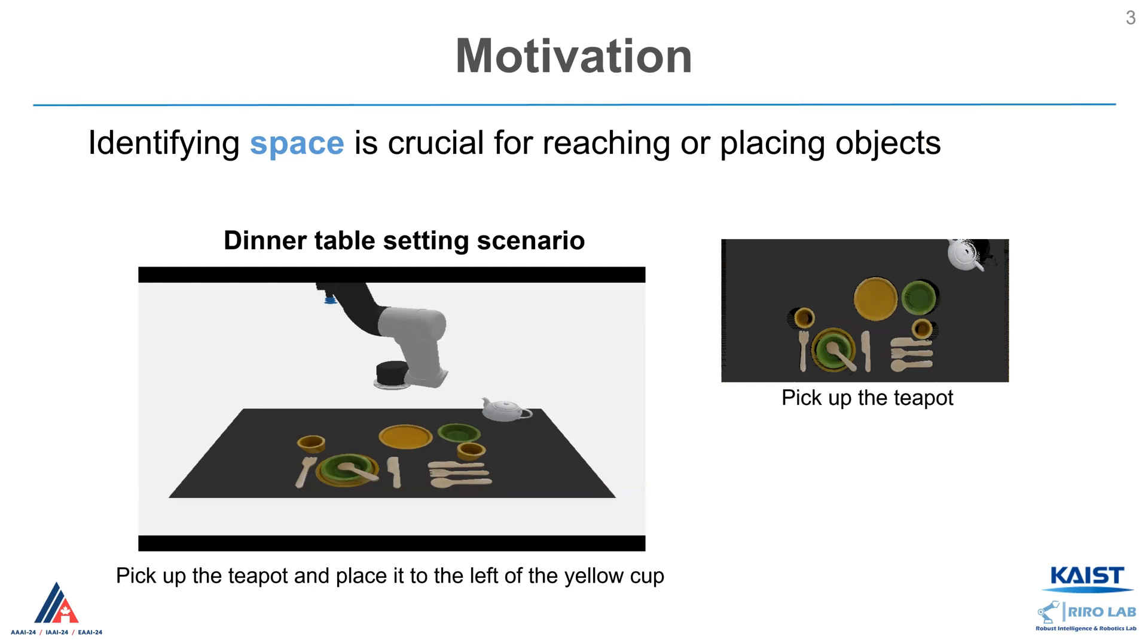Consider a scenario where the robot is assisting table setting. Given a language command, pick up the teapot and place it to the left of the yellow cup. The robot can easily locate the teapot for picking.